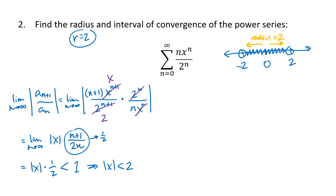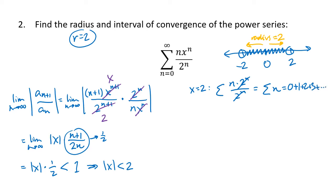For the interval of convergence, we know it goes from minus 2 to 2, but we need to check the endpoints directly. When x equals 2, we get the series: sum of n times 2 to the n divided by 2 to the n. Those divide out, giving us the sum of n, which is 0 + 1 + 2 + 3 and so on. That diverges by the divergence test — those terms do not go to 0.